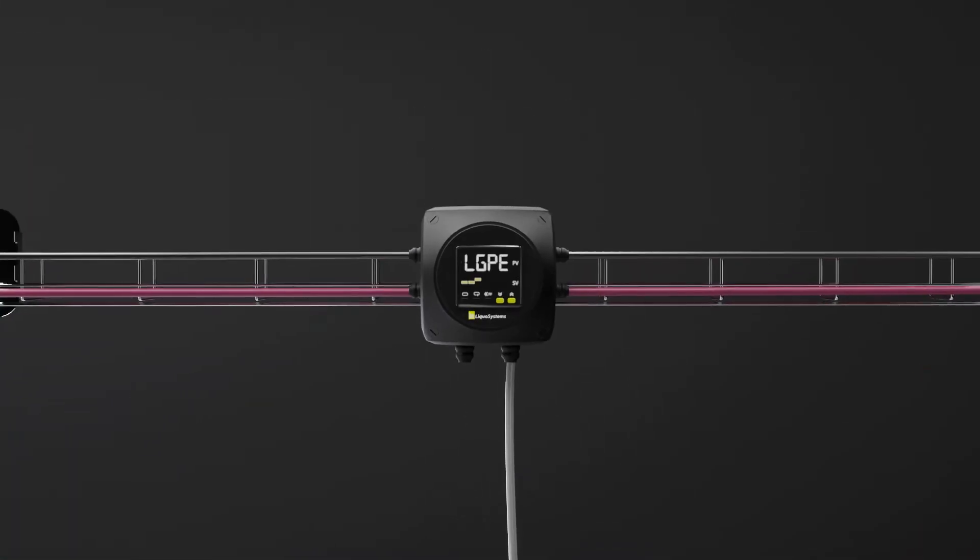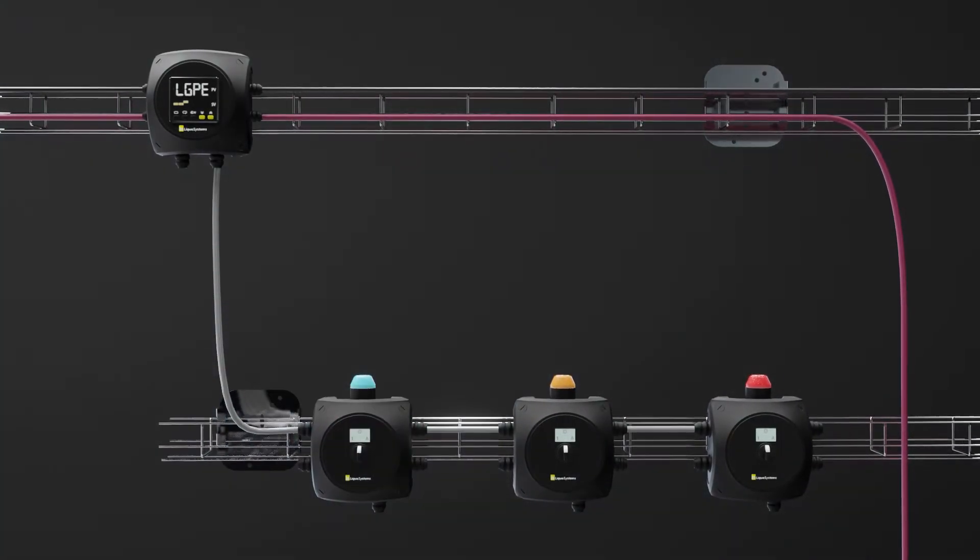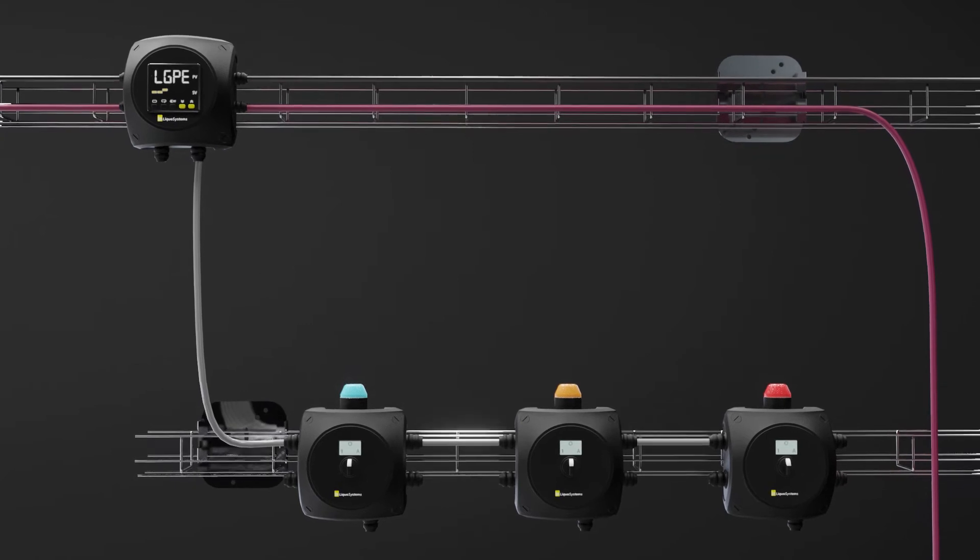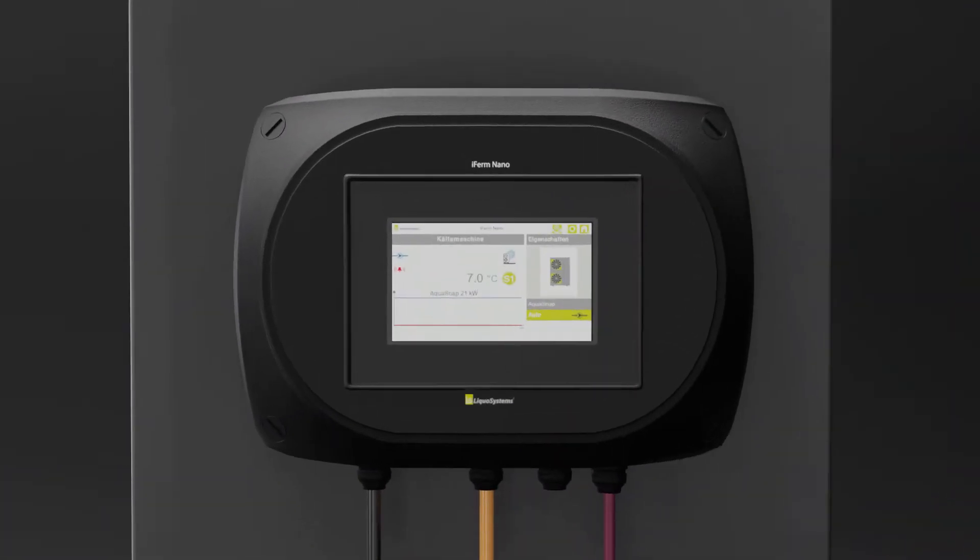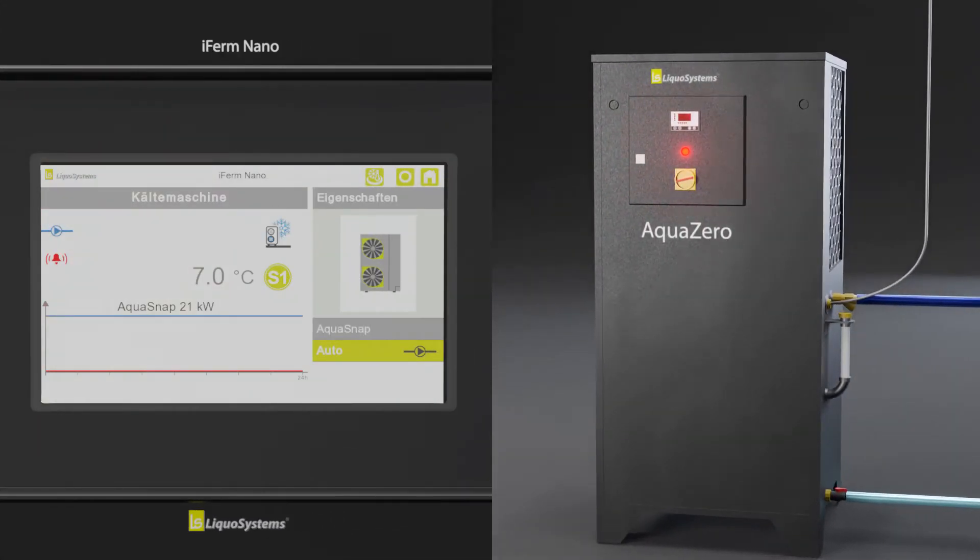This configuration also requires a nano top ID30 and the nano switch blue for a pump cold, the nano switch orange for a pump heat, and the nano switch red for an alarm signal. Direct access to the aqua zero or aqua snap cooling units is possible via the aqua control option.